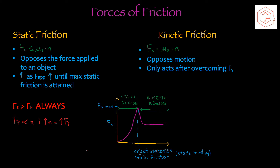Elaborating further, static friction has the formula Fs ≤ mu s times normal. Static friction opposes the force applied to an object, and it increases as the applied force increases until the max static friction is attained. After exceeding this max static friction, kinetic friction takes over, and it has the formula Fk = mu k times normal force. Kinetic friction opposes the motion of the object, and it only acts after overcoming static friction.